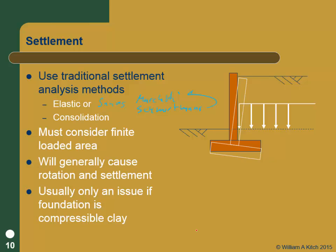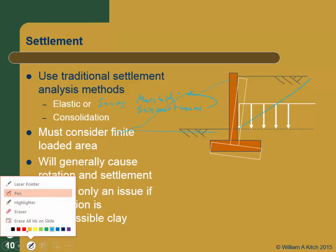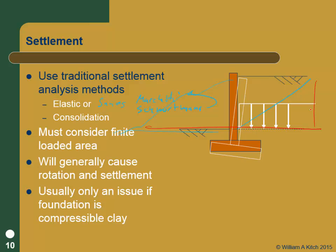Think carefully about construction sequence and loading paths. If this was originally a cut slope — you cut back temporarily and then filled up — you'll get a very different analysis than if all the material behind the wall is new fill. In the cut-and-reload case, you're unloading and then reloading, so you're on a different stress-strain curve. If it's the fill case, you'll definitely get backward tilt as we saw from the field test data. The loading paths the soils undergo and how you do construction really matter.